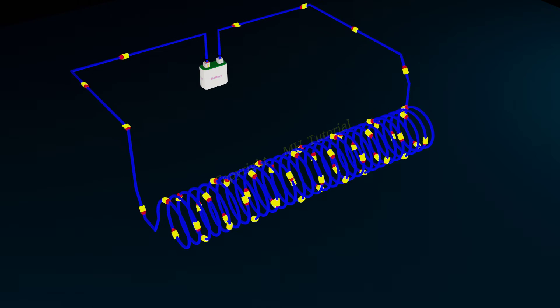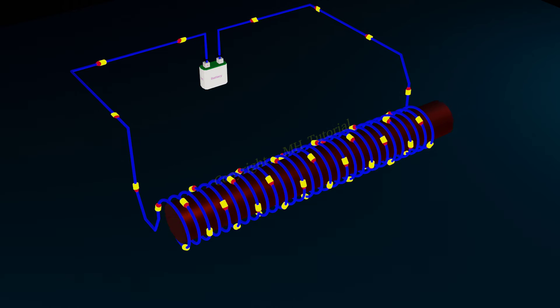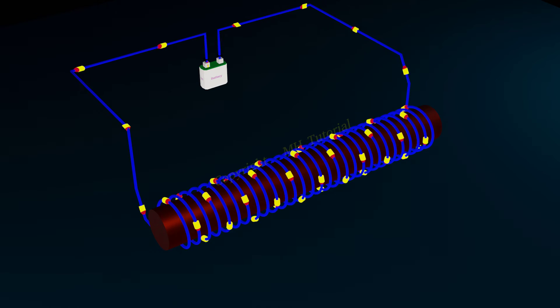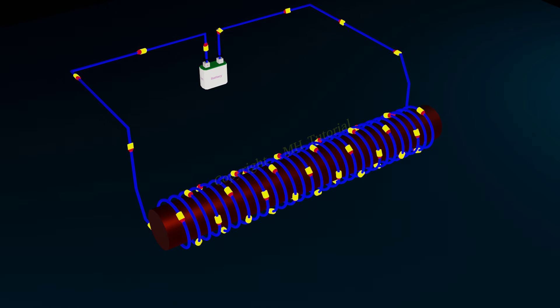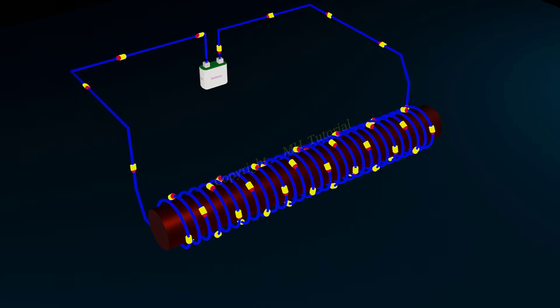If you choose a ferromagnetic material, like iron, cobalt, nickel, etc., as a core material, the resultant magnetic field will be higher.